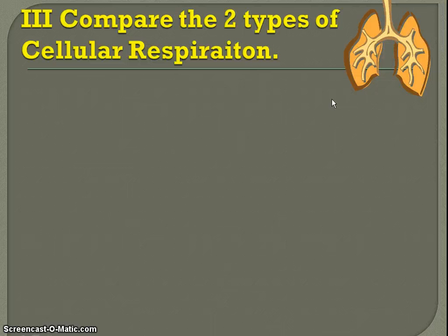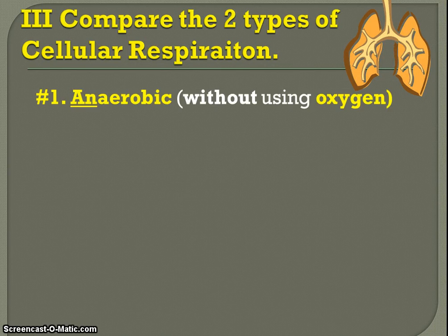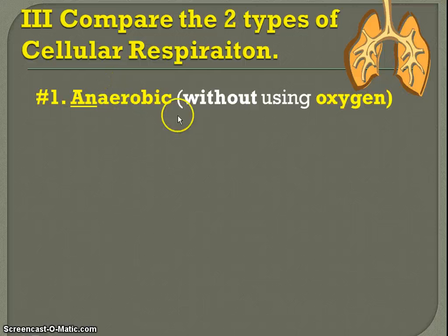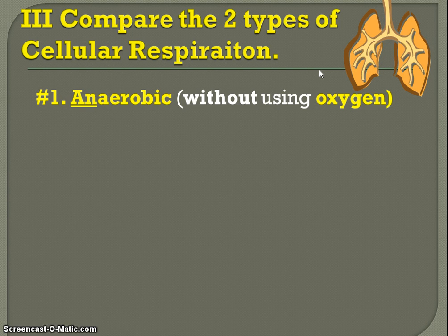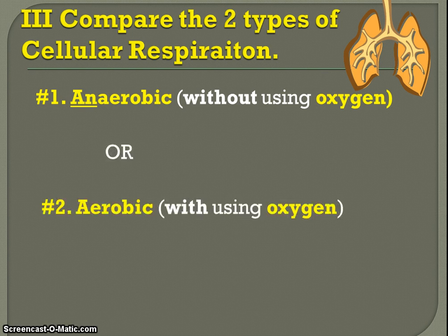Here are the two types, and they are new vocab words, so make sure you highlight them. The first one is anaerobic. That prefix 'a' or 'an' always means 'not,' so anaerobic means without using oxygen — because the word 'aerobic' sounds like the word 'air,' or oxygen, and the prefix 'an' means without or not. The other type of cellular respiration is the opposite: aerobic. So if the first type is without oxygen, the second type is aerobic — with oxygen.